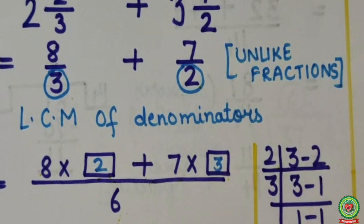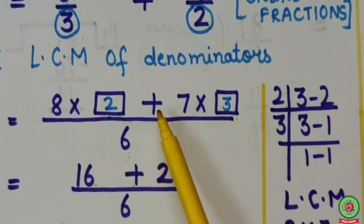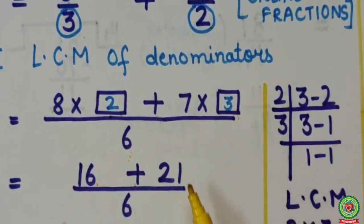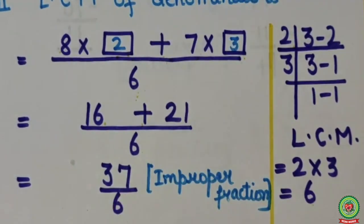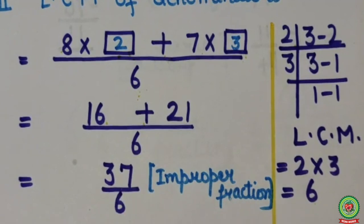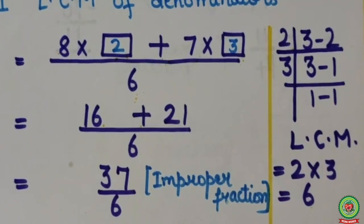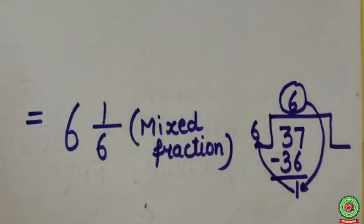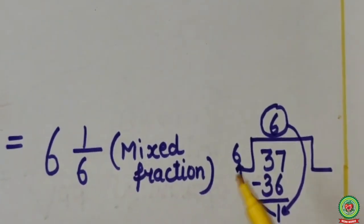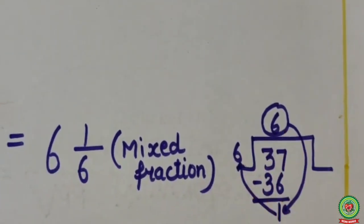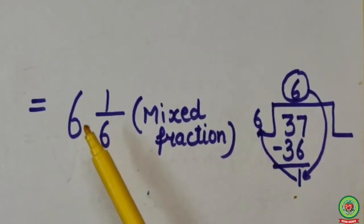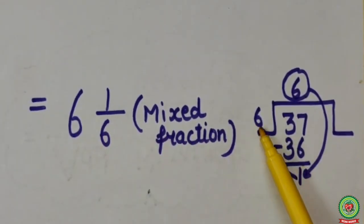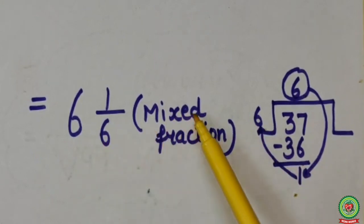First multiply, then add. Here 8 twos are 16, plus 7 threes are 21 upon 6. Now 16 plus 21 equals 37. So it is coming 37 upon 6, which is an improper fraction. So we will change it into a mixed fraction. For that, divide 37 by 6. It is coming 6 remainder 1, so 36 minus gives remainder 1. Quotient equals the whole number, so here the answer is 6 whole number 1 upon 6, which is your answer in mixed fraction.